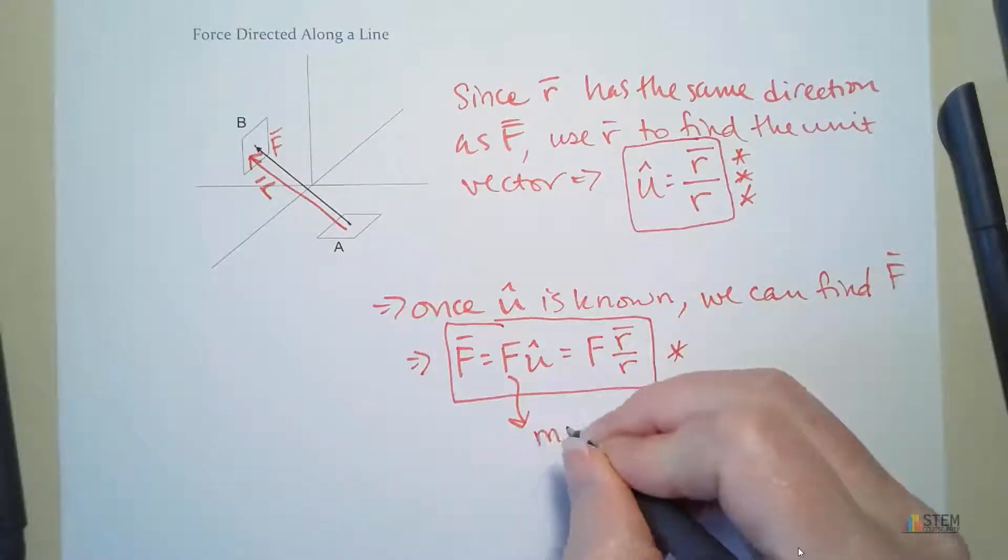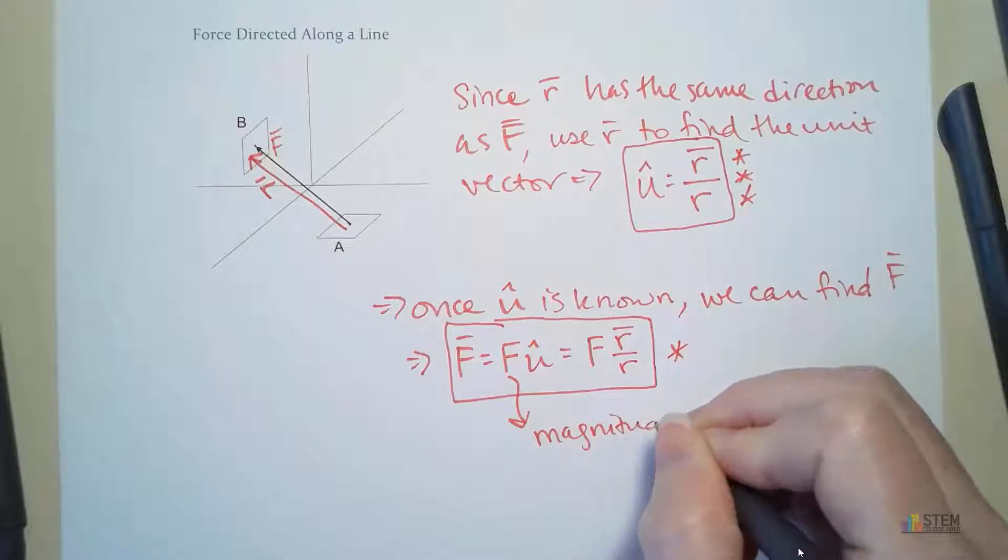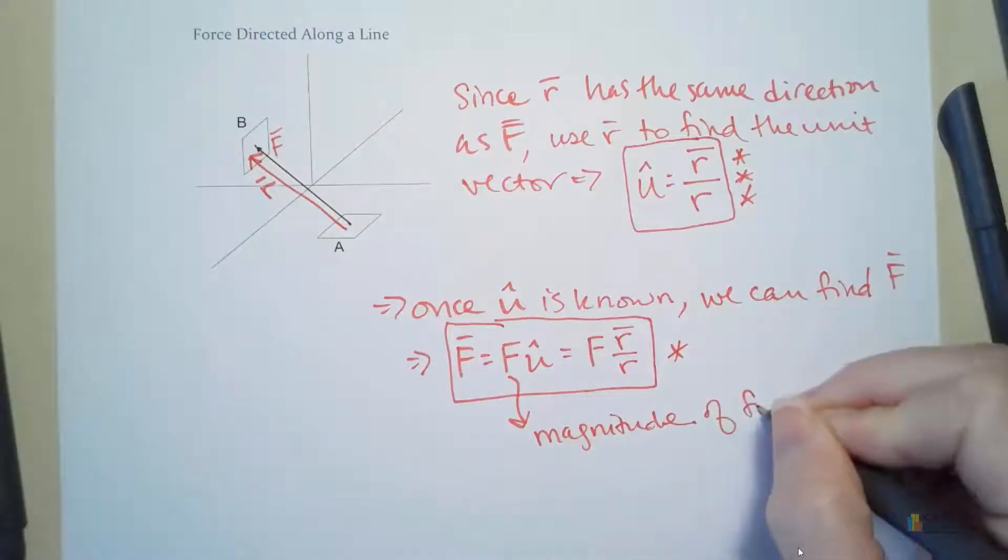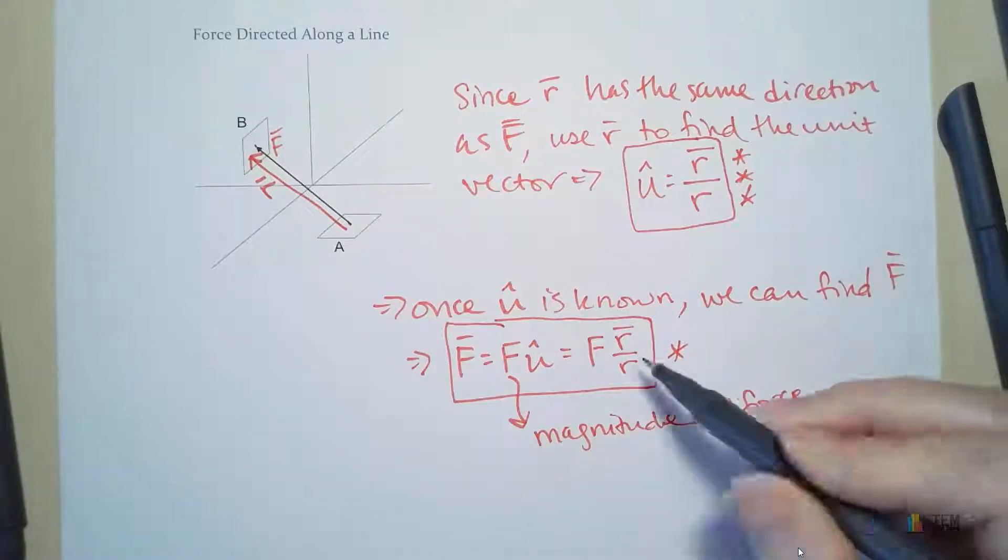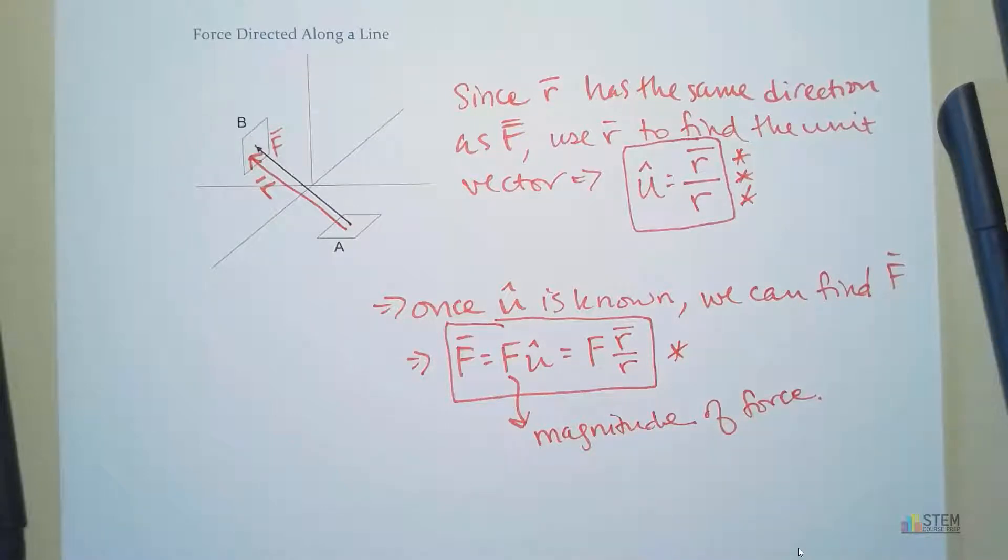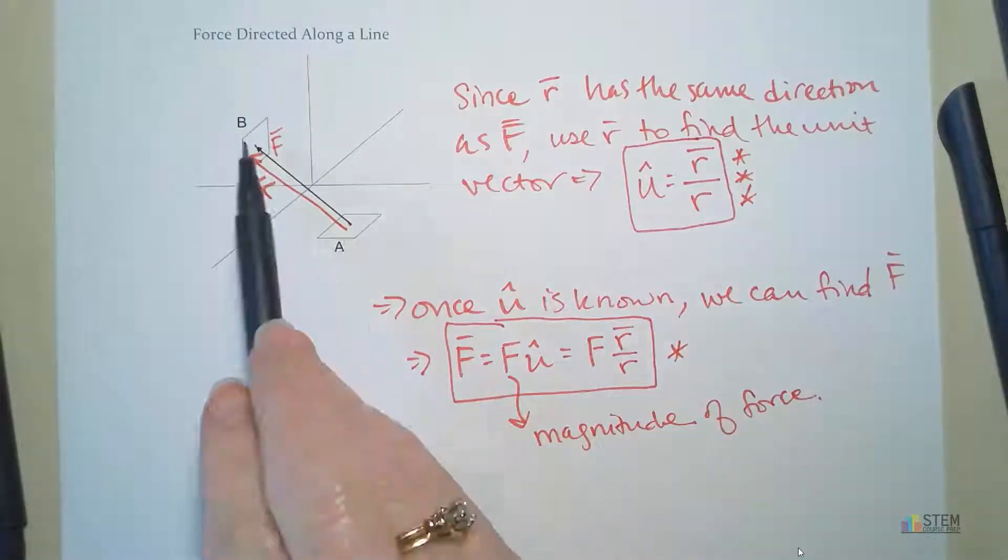And again, this F here, that's just the magnitude of the force. And this is how you'll go about finding the force vector if you're given coordinates of a point.